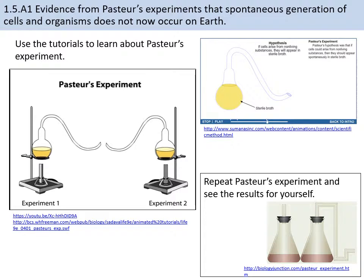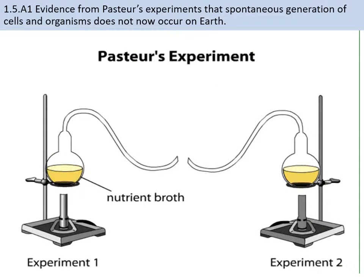As Pasteur was developing the technique for pasteurization, he also provided a lot of evidence that living things can only really come from other living things that have existed in the same area. Pasteur designed a procedure to test whether sterile nutrient broth could spontaneously generate microbial life. He set up two experiments — in both, he added nutrient broth to flasks, bent the necks into S-shapes, and then boiled the broth to kill any existing microbes.